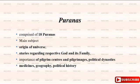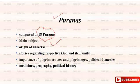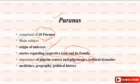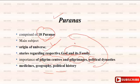Another important literary source is the Puranas. There are 18 Puranas in India. The main subjects of the Puranas are: origin of the universe, stories regarding respective gods and their families, important pilgrimage centers, political dynasties, events, and geography. With the help of the Puranas, anybody can get information for reconstructing the history of a particular period.